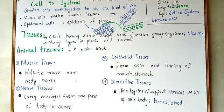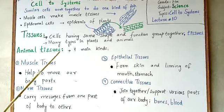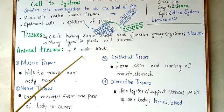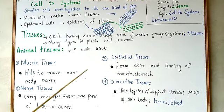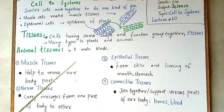There are different types of tissues in plants and animals. In today's lecture we will study about animal tissues. There are four main kinds of animal tissues: muscle tissues, nerve tissues, epithelial tissues, and connective tissues.